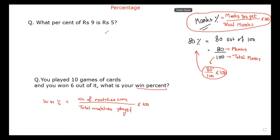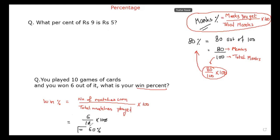Let us put the values and check whether you got the correct answer or not. How many matches did you win? Six. How many matches did you play? 10. Multiply by 100 — cancel the zeros, 6 into 10. I think it should be 60 percent, not 6 percent.